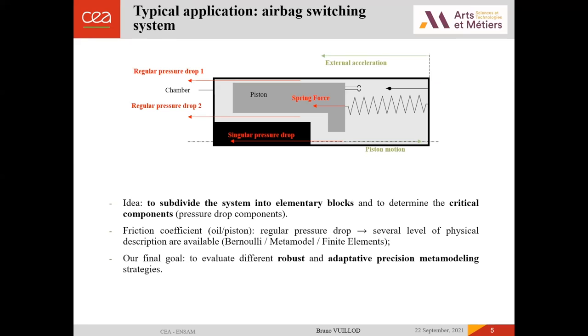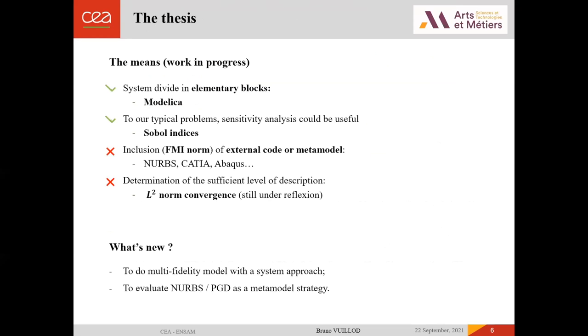Our final goal is to evaluate different robust and adaptive precision metamodeling strategies to replace these critical components into a system more complex. I have different means to do that. To model our system through elementary blocks, I will use Modelica and especially MapleSim or Dymola. For our typical problem, sensitivity analysis could be useful to be sure that we are working on the good part of our system. So I will use Sobol indices for that. I have also to include the external code or metamodel, thanks to FMI in our global Modelica model. And we have also to determine the sufficient level of description of our critical blocks, thanks to L2 norm convergence. This is still under reflection.